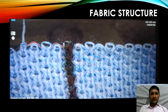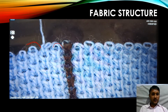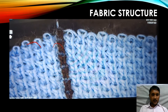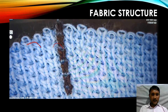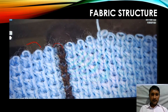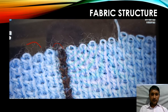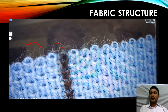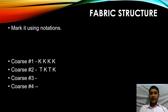Let's start unravelling course number 2. After the vertical line, we are finding tuck followed by knit, tuck followed by knit, tuck followed by knit. So we can notify course number 2 as tuck, knit, tuck, knit.